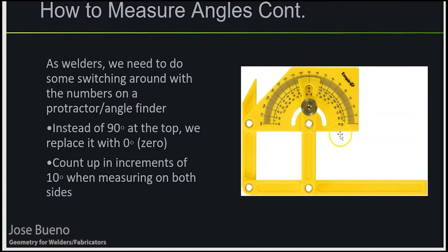There's a reason why we do that. It's because when we're beveling plate, all of our plates are typically already at 90 degrees. So we consider that our baseline, and that's why we put 0 up at the top. That way, when we're beveling, it's easier to say we're going to put a 30-degree bevel. So if this is our plate — imagine a 90-degree edge of a plate — instead of saying 30 degrees way down here, it's the exact opposite; we only come to about right there and make our cut.